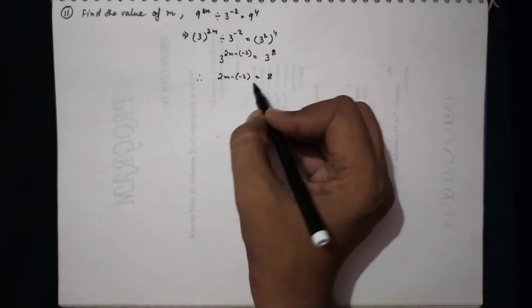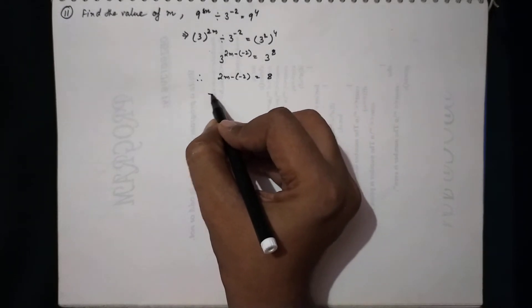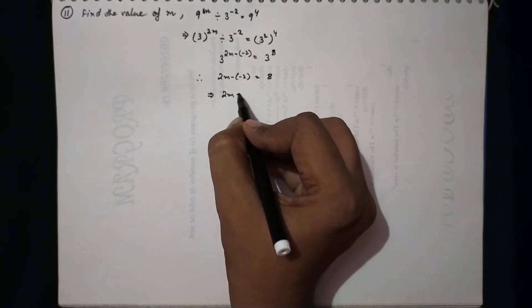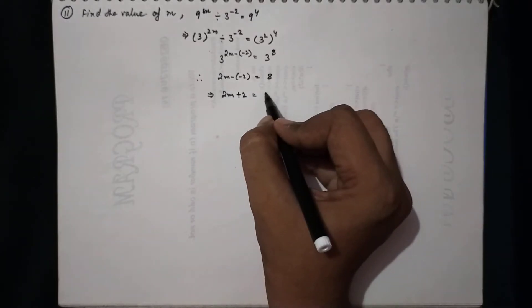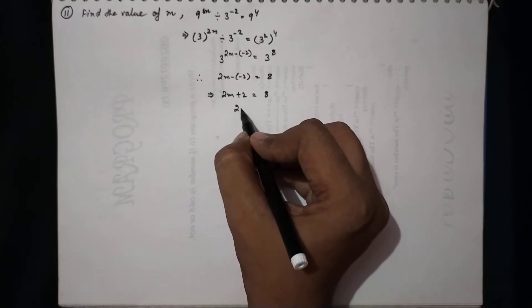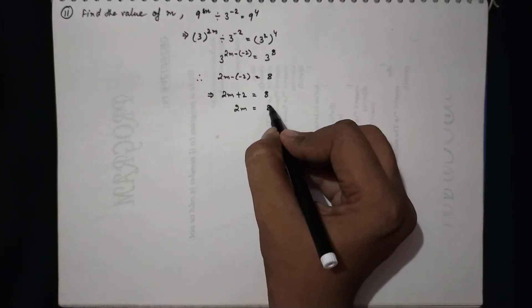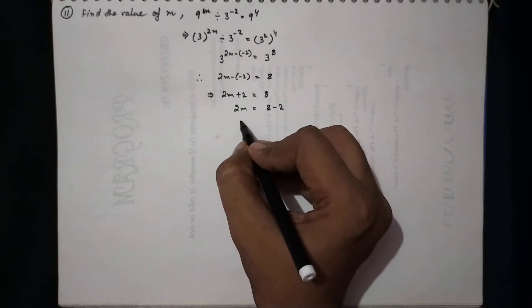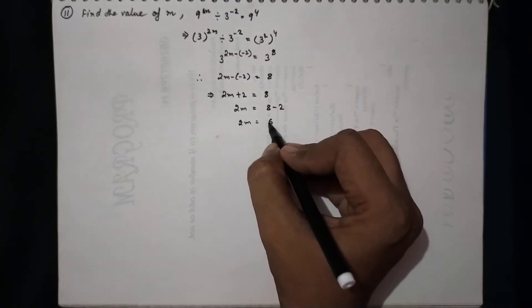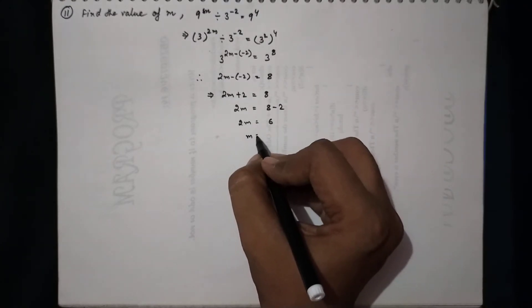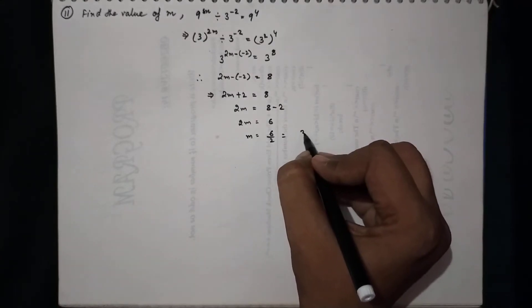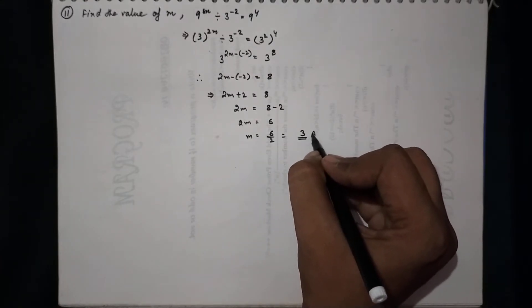Since the bases are equal, the powers are also equal. So 2m + 2 = 8, which gives 2m = 6, therefore m = 6/2 = 3. The value of m is 3.